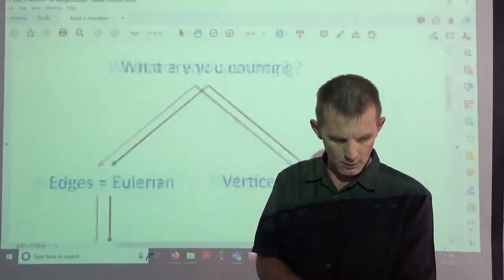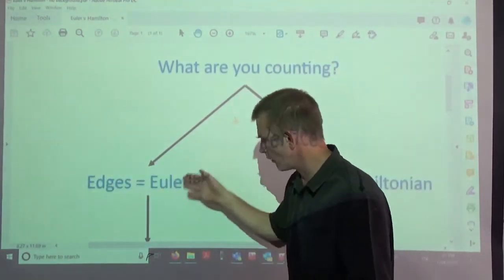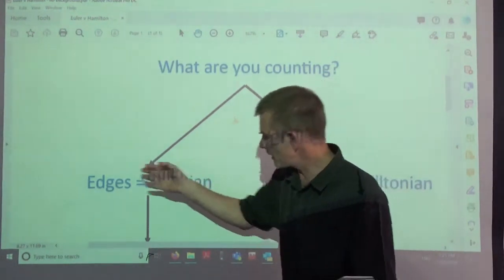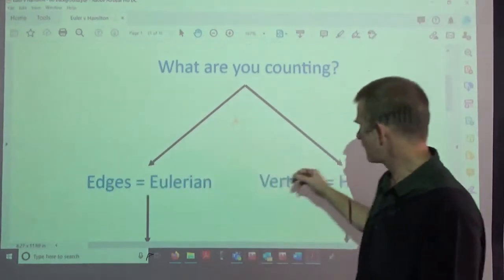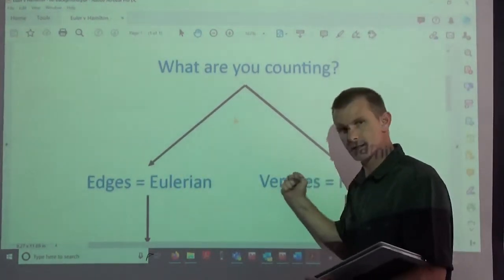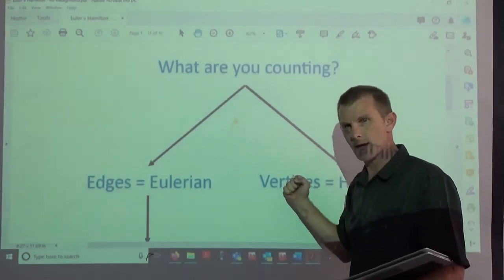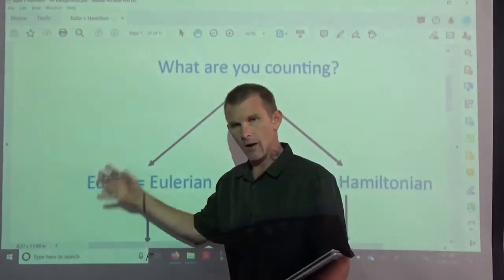The first thing to be aware of is: if you are looking at edges or an Euler network, then that's the thing you're counting. Edges are the key thing. If you're looking at a Hamiltonian network, the vertices are the key thing.